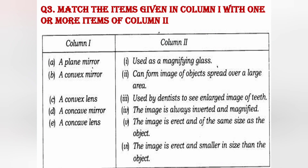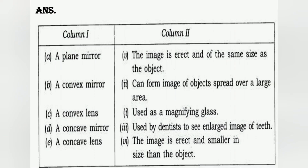Next question: match the items given in column one with one or more items of column two. Column one mein mirror aur lens ke naam diye gaye hain, unko column two mein diye gaye unke use ya unse related sentence se match karana hai. A. A plane mirror — the image is erect and of the same size as the object, kyunki plane mirror mein jo image form hoti hai, woh erect hoti hai aur uska size bilkul same hota hai jitna object ka hota hai.